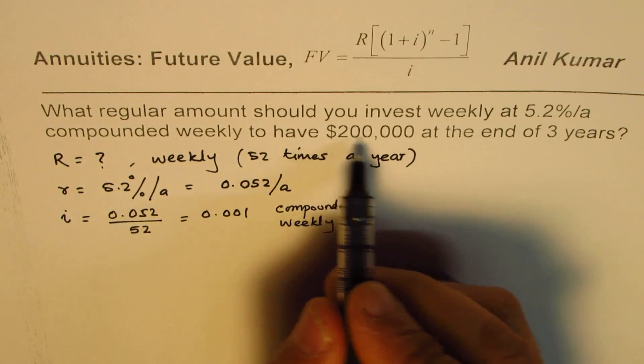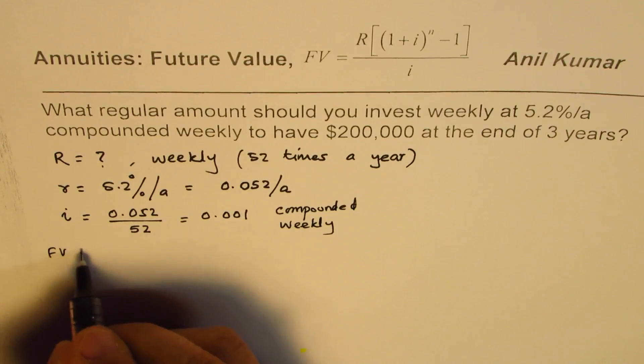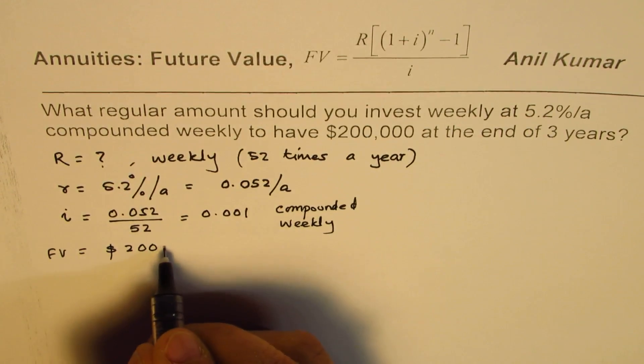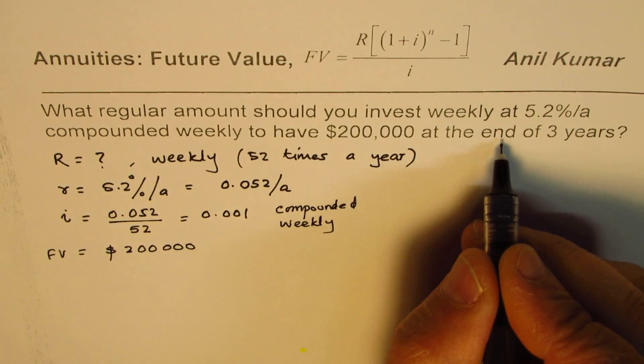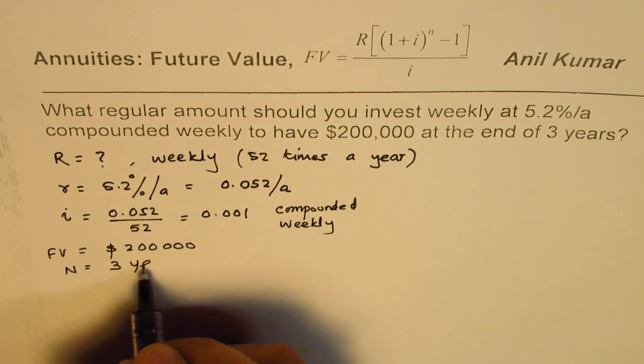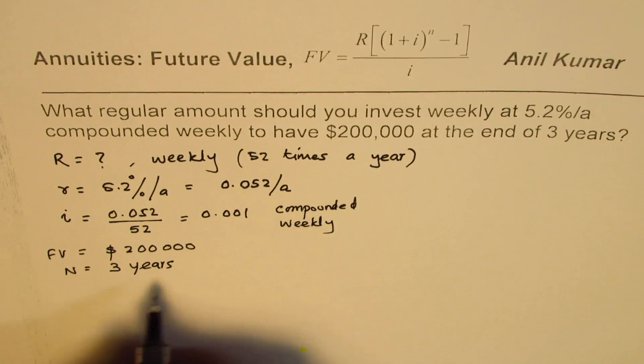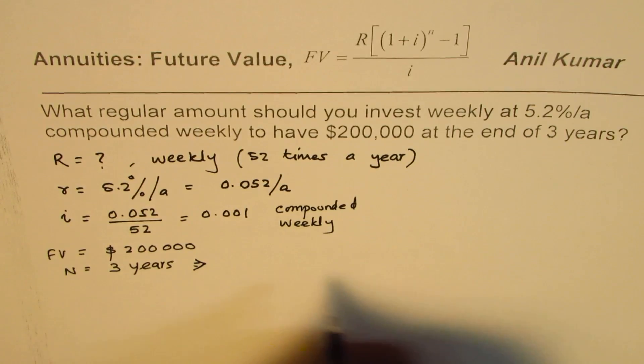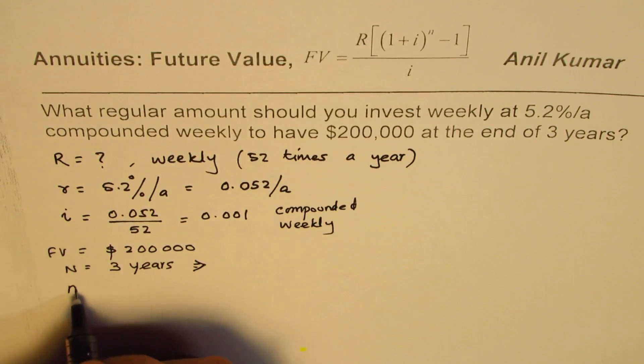And final value, what you are interested in, is $200,000. End of number of years is 3 years. Now that 3 years is actually equal to, implies, I should write N.